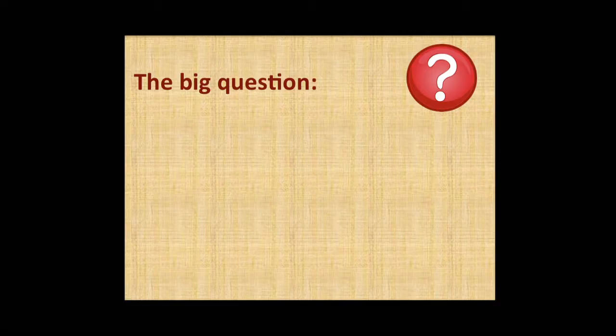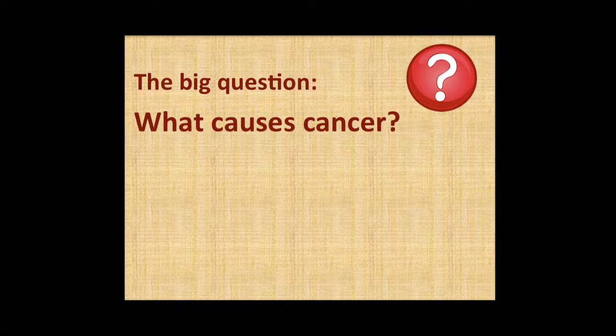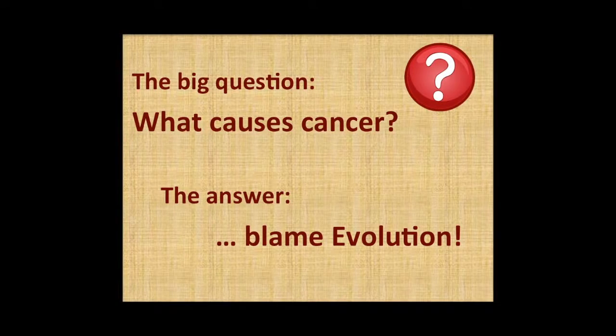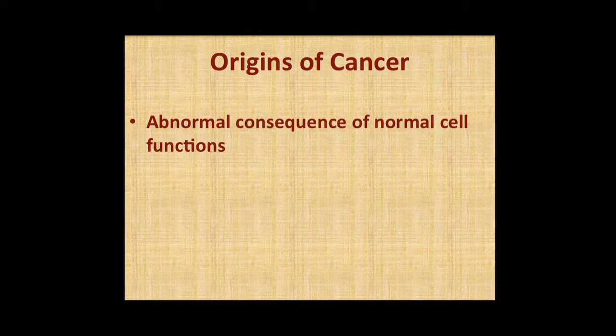My task tonight is to explain why in the world cancer has to exist given the evolution of our species. The real questions we are going to attempt to address over the next two weeks are: what are the causes of cancer? The basic premise for these lectures is that it really is related to evolutionary processes. So what is cancer? It is the abnormal result of normal cell functions that go haywire in some manner that allows them to exceed the boundaries of normal cells.